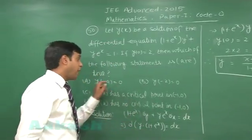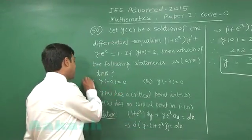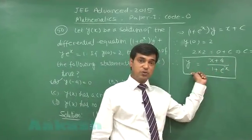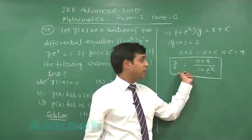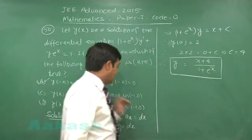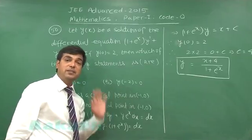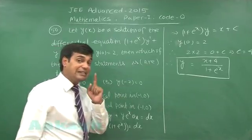The solution for this equation for the given particular condition. Now, from the options y of minus 4 clearly it is 0 when you substitute x equals minus 4 in this equation it goes to 0. Second is wrong because on substituting minus 2 it is not 0. Third and fourth are talking about critical point in the interval minus 1 comma 0. So, we need derivative.